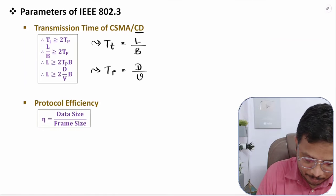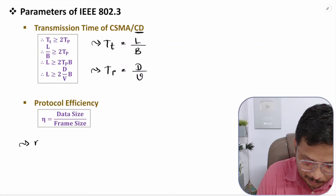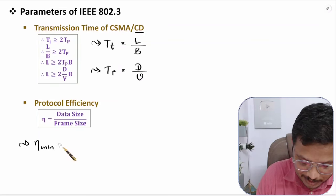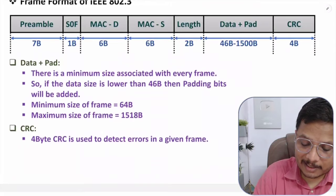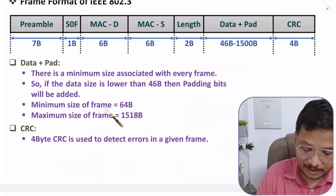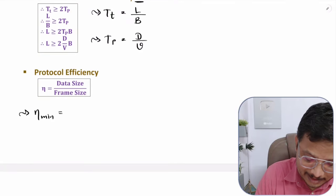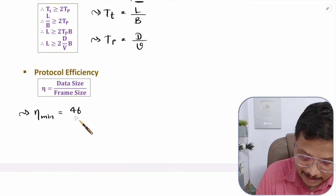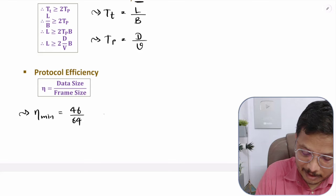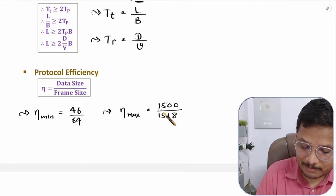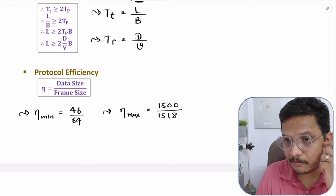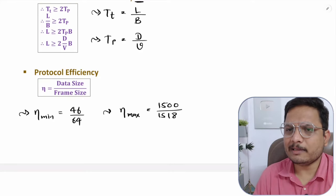Protocol efficiency is calculated as data size divided by frame size. Minimum efficiency: minimum data is 46 bytes, frame size is 64 bytes, so efficiency = 46/64. Maximum efficiency: maximum data is 1500 bytes, frame size is 1518 bytes, so efficiency = 1500/1518.